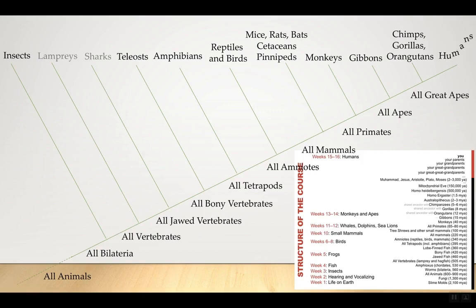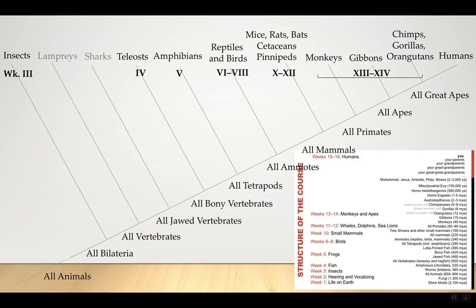The course schedule: week three covers insects. We'll skip lampreys and sharks. Week four covers teleosts — bony, ray-finned fish, specifically the midshipman. Week five covers amphibians, maybe some reptiles. Weeks six, seven, and eight cover birds. Then mice, rats, bats, cetaceans, and pinnipeds — non-primate mammals. Then monkeys, gibbons, orangutans, chimps, gorillas. And finally, the last two weeks: humans.